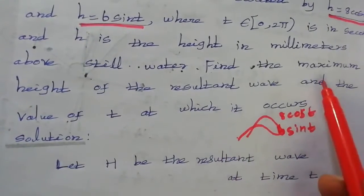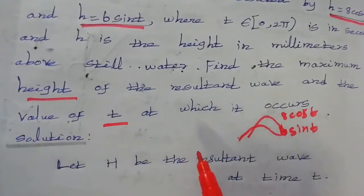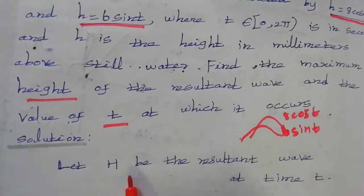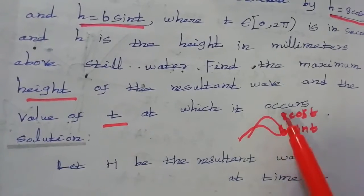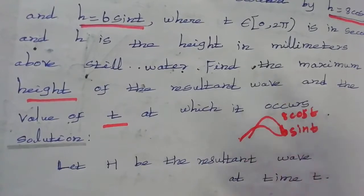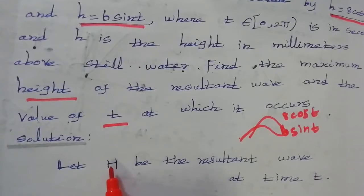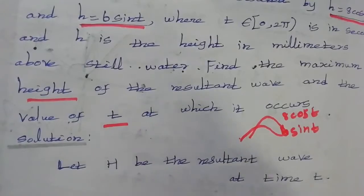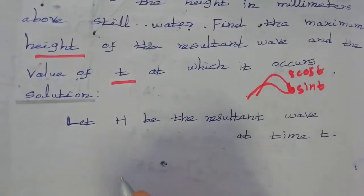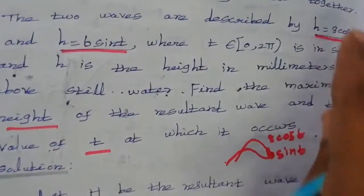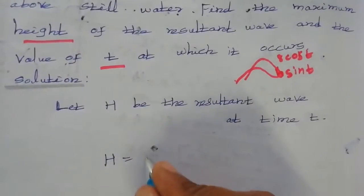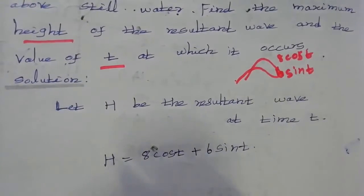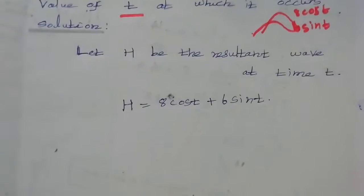The height and t value of the resultant wave. So the resultant wave at time t, the first wave is 8 cos t plus second wave is 6 sin t. The resultant wave height is the sum.